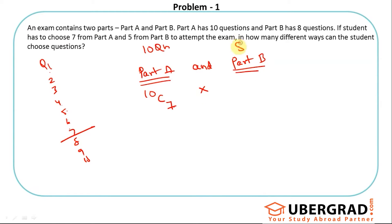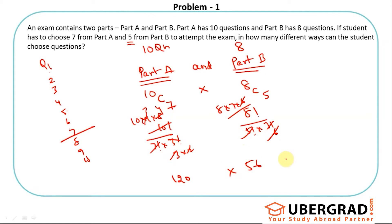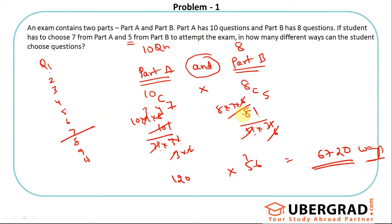For Part B: 8 questions, choose 5, that's 8C5. Now, 10C7 = 10! / (7! × 3!) = (10 × 9 × 8) / (3 × 2 × 1) = 720 / 6 = 120. And 8C5 = 8! / (5! × 3!) = (8 × 7 × 6) / 6 = 56. So the total is 120 × 56 = 6,720 ways to attempt the exam.